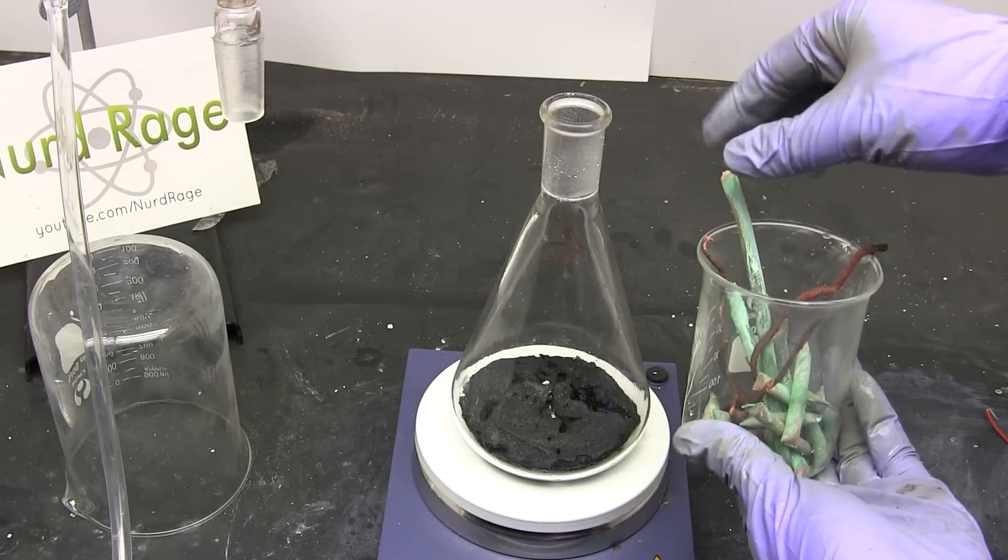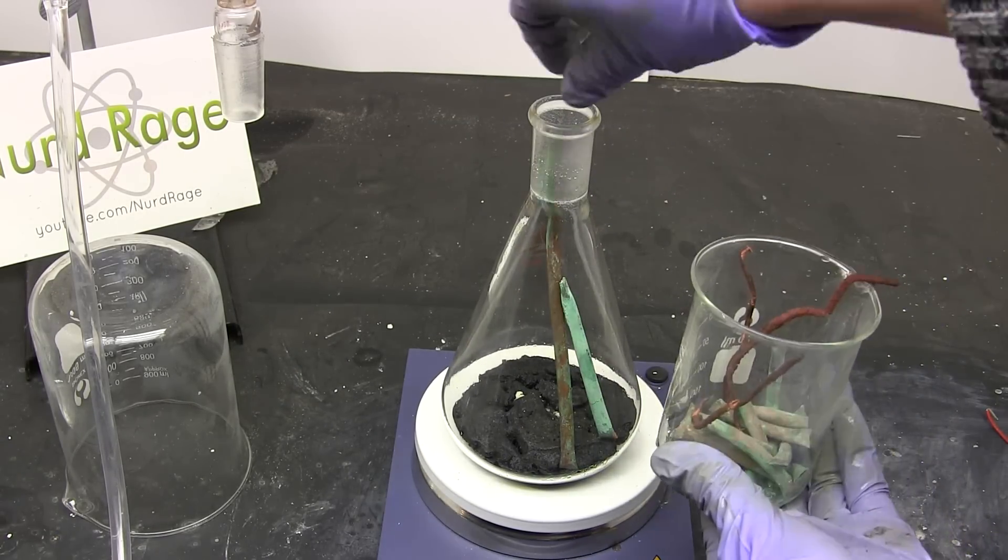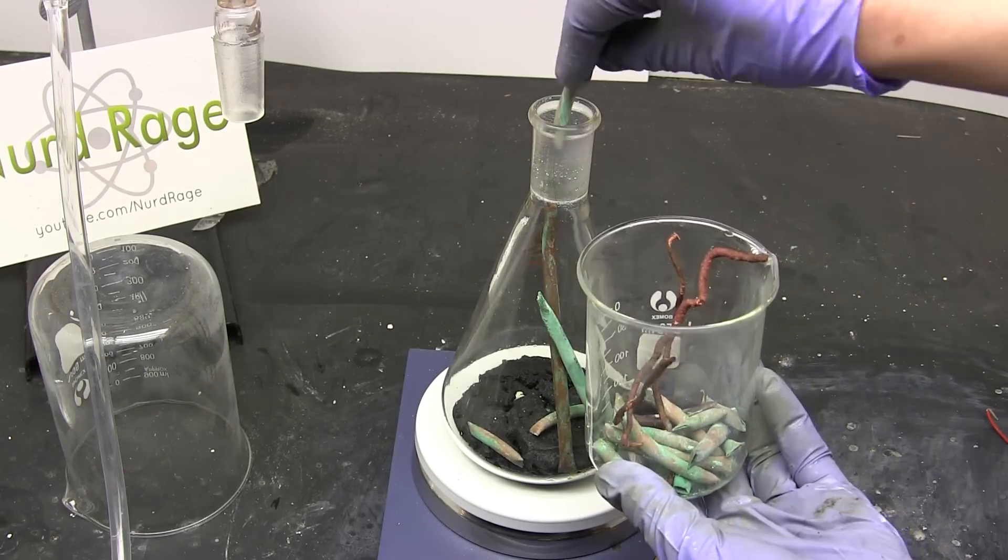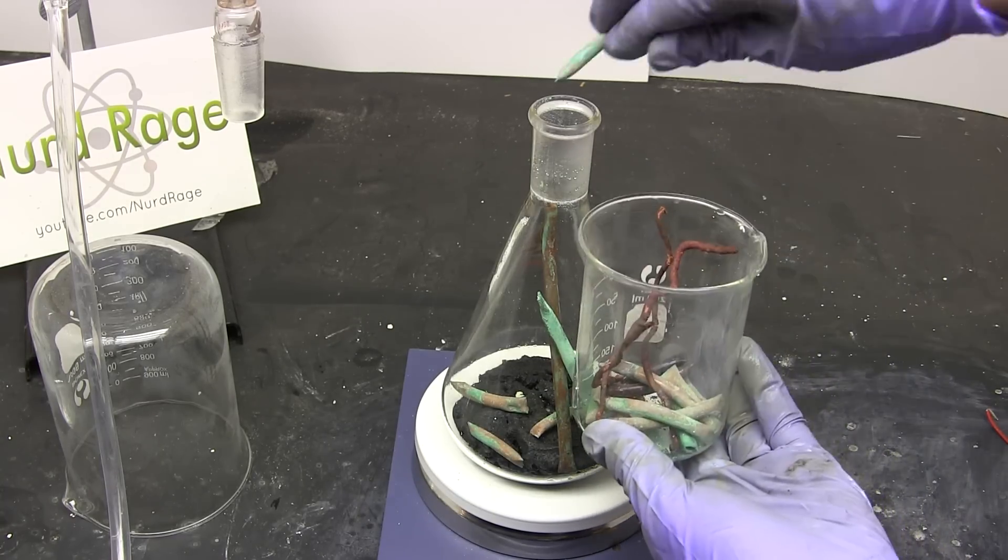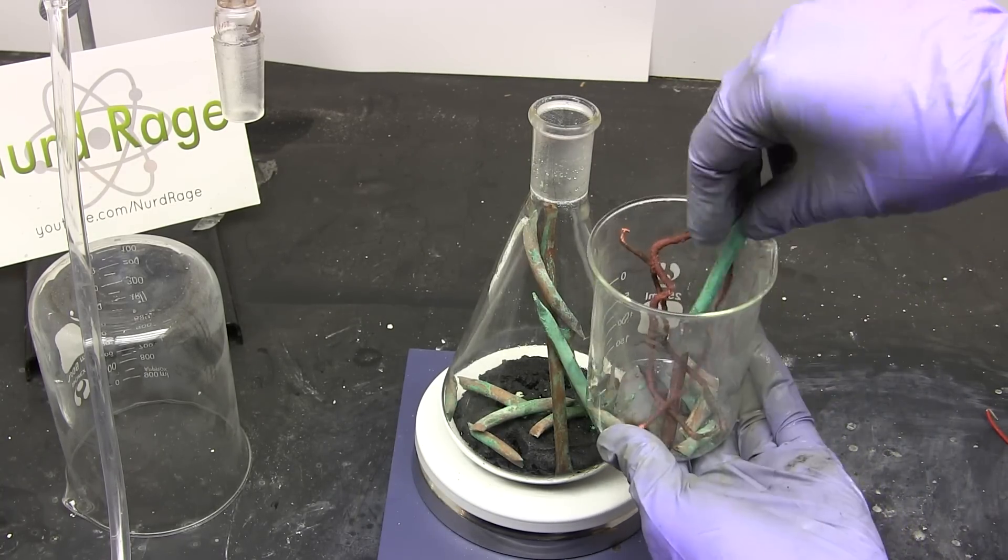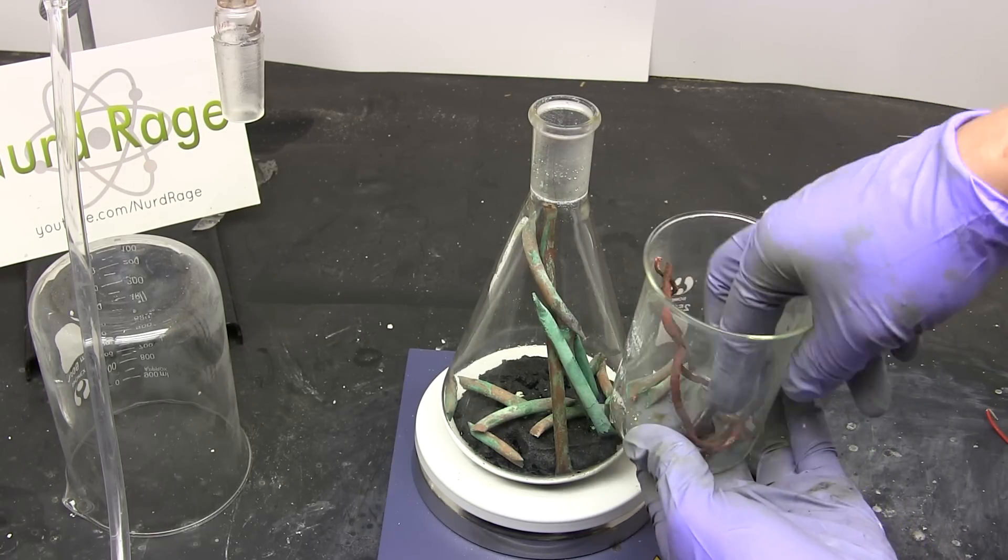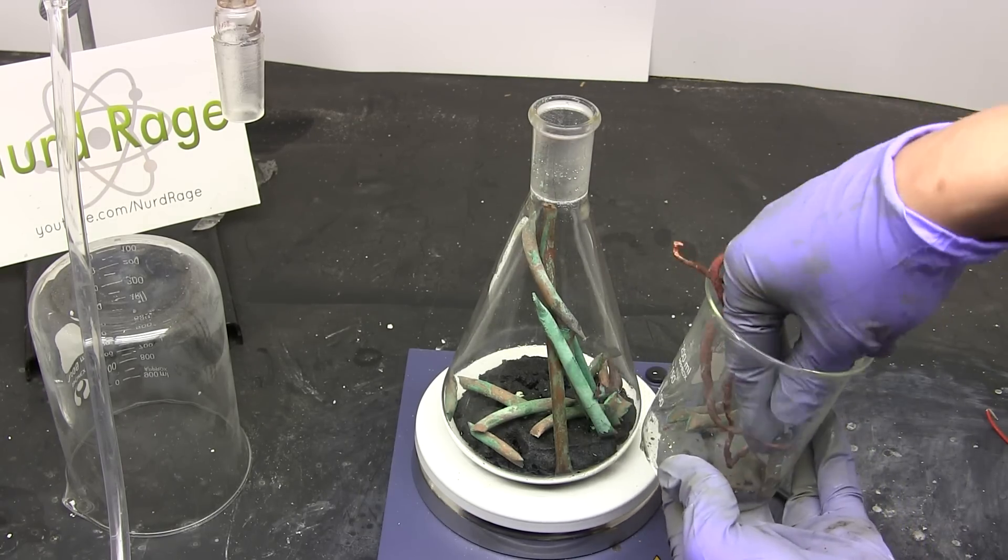Now we add copper metal. We want to completely react all the remaining ferric chloride and copper chlorides. Now if you distilled off the acid to dryness like I did and weighed the residue then the ratio to use is 3 to 1. For every 3g of spent ferric chloride etchant add 1g of copper metal. This is a rather huge excess but we're doing it to ensure the reaction goes to completion.